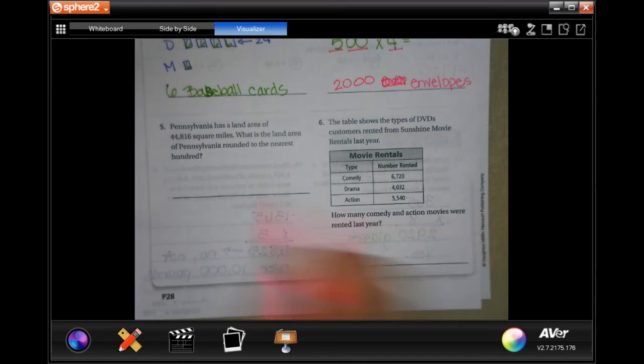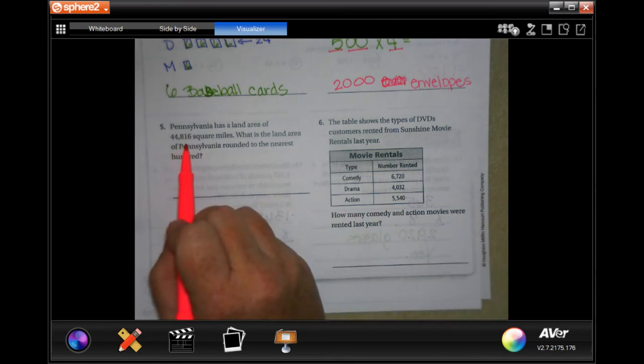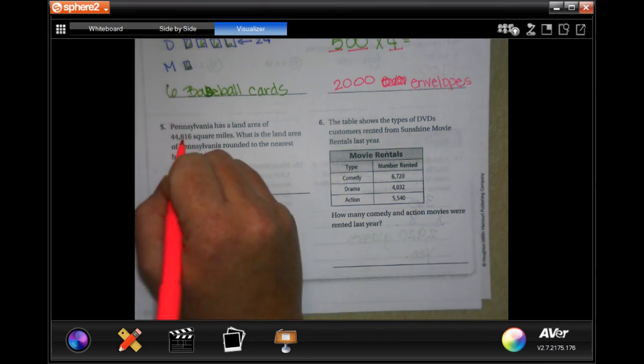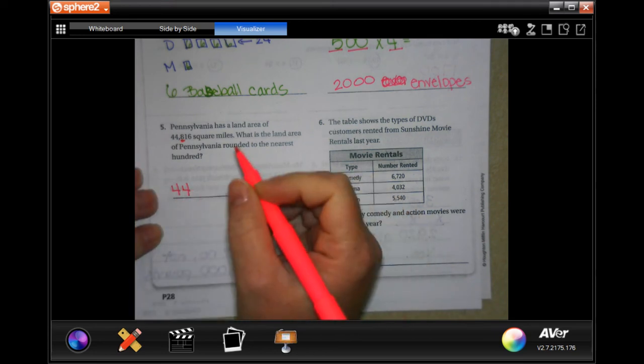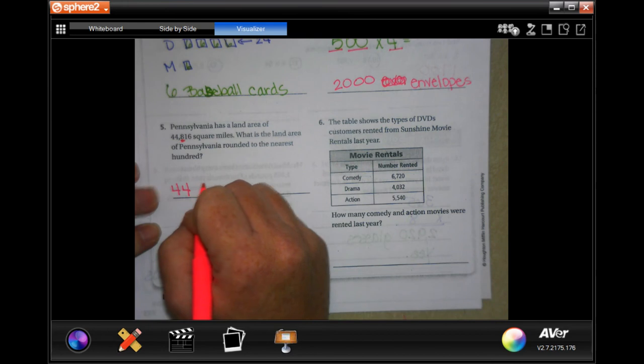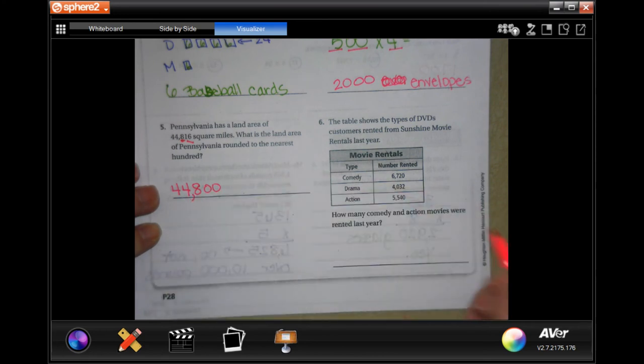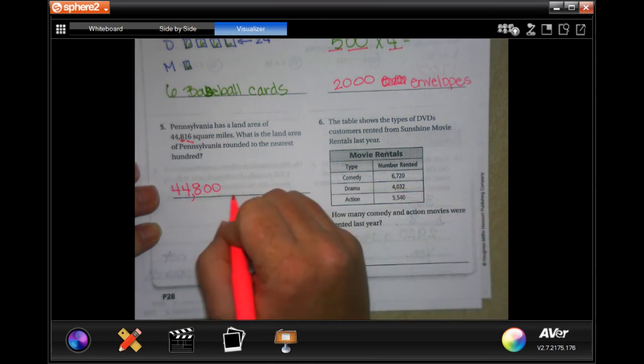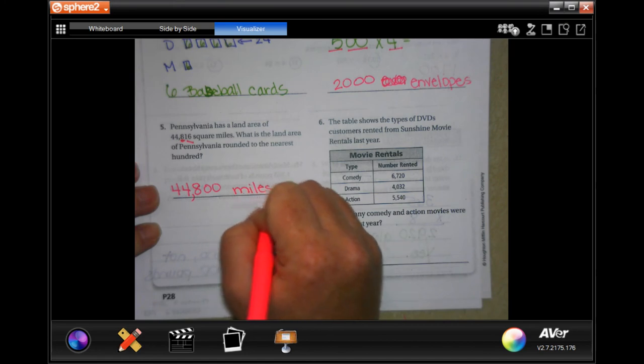Pennsylvania has a land area of 44,816 miles. What is the land area of Pennsylvania rounded to the nearest hundred? So everything before it is going to stay the same. Now we're going to look at the one to tell us if the eight needs to round up or not. Well, one is less than five, so I can keep that eight. Then everything after it becomes a zero. So 44,800 miles.